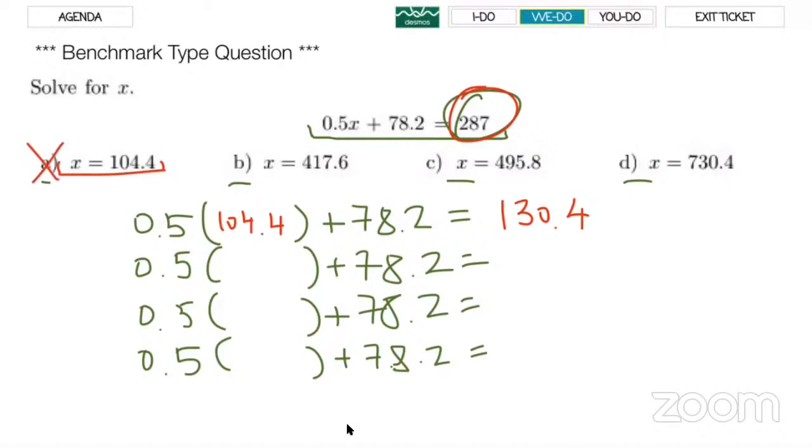So now I'm going to go B. Let's see if when we plug in, instead of x, 417.6, we're going to end it up 287. So I'm going to use my calculator again. 0.5 times 417.6 plus 78.2. And that is 287. Okay, I got it. So now this is equal to the result, which is yes, we're right. So that means our answer would be B. When you get the answer, you don't have to check the others, because others will definitely be the different one. So yes, this is it.